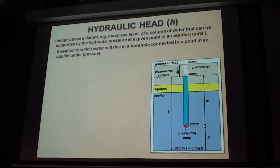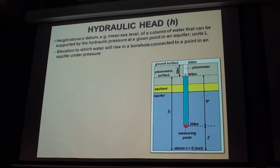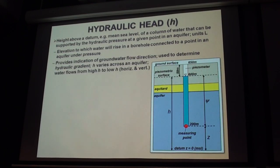Hydraulic head is the elevation to which water rises in a borehole connected to a point in an aquifer under pressure. In a confined aquifer: drill a hole through the aquitard into the confined aquifer, and the water level will rise up to, say, 600 metres above sea level — that's the piezometric surface. The water level in your well essentially is the hydraulic head, and it tells you which way groundwater is flowing in your area. It provides an indication of flow direction used to calculate the gradient dh/dl in Darcy's law.